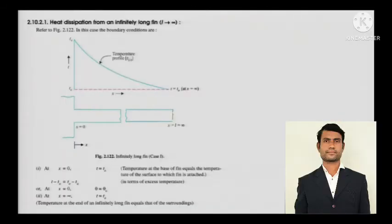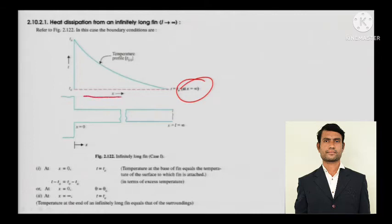Heat dissipation from an infinitely long fin — where L tends to infinity — is theoretical and hypothetical, but quite easy to understand conceptually. As X approaches infinity, the temperature profile starts decreasing along the direction of X and eventually comes down to the ambient temperature.